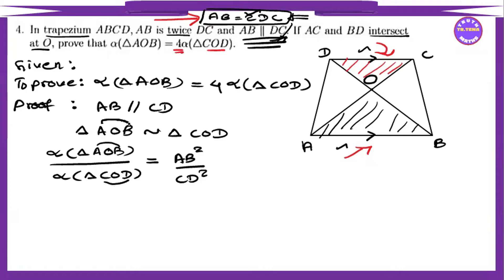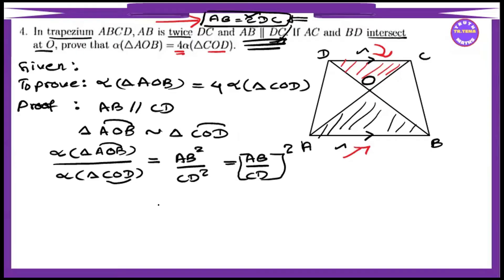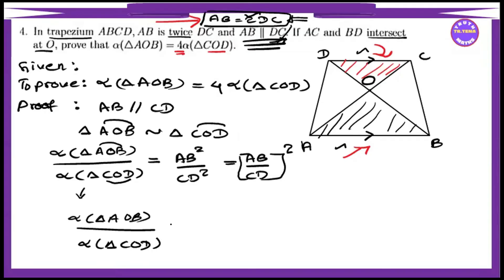This is the relationship between AB and AB. The whole square equals AB by CD. The area of triangle COD: triangle AOB by area of triangle COD is equal to AB² by CD².